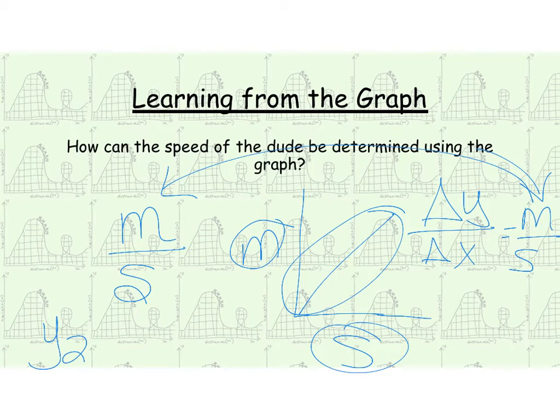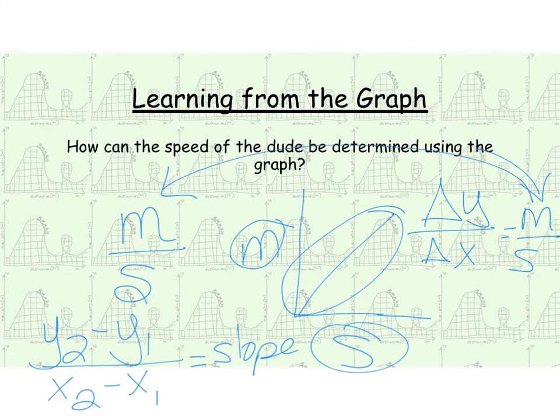Don't forget that slope is, you have two points on the graph, you have y2 minus y1 over x2 minus x1. That's pretty much our generic formula for slope.